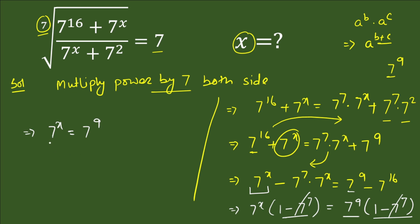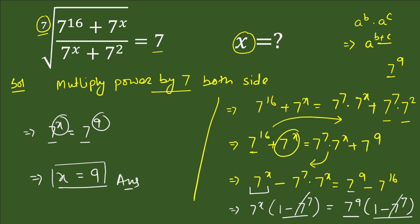Here the base is the same on both sides, so we equate the exponents. The power on the left is x and on the right is 9, so x equals 9. That is our final answer. I hope you learned something from this. Please give a thumbs up and subscribe to our YouTube channel. Thank you for watching.